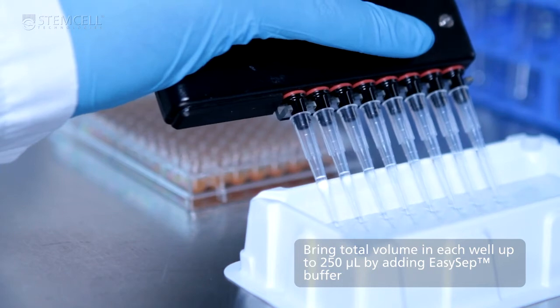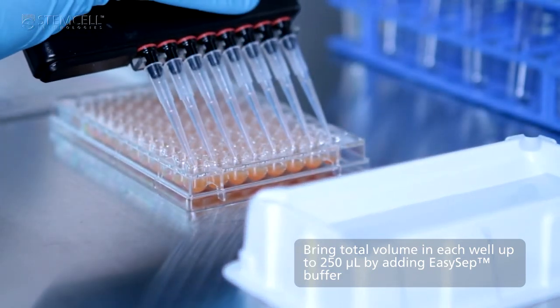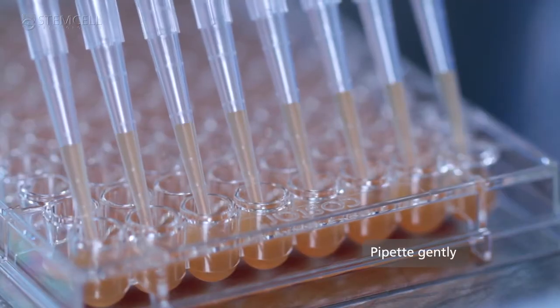Bring the total volume in each well up to 250 microliters by adding EasySep buffer and pipette gently to mix the cells.